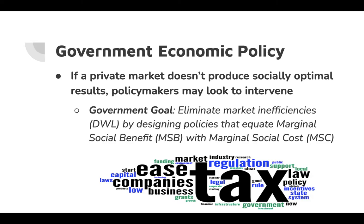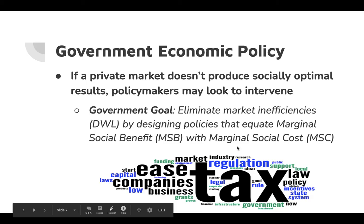This is when government economic policy comes in. They might attempt, through various means, to eliminate that deadweight loss. If the private market doesn't produce the socially optimal results that society wants, then government policymakers might feel compelled to intervene. Their goal would be to eliminate those market inefficiencies by designing policies that equate the marginal social benefit with the marginal social cost.